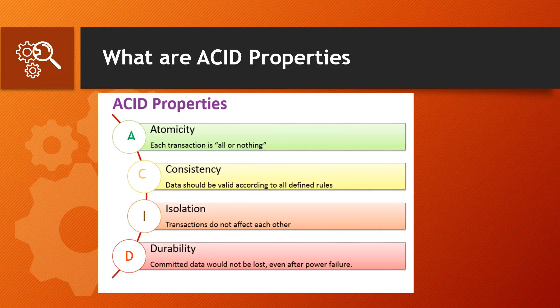Atomicity means all or nothing — either you have a transaction or not. Consistency means a defined rule; according to that, our data is saved and updated, and it doesn't go beyond the rules. Isolation means each transaction is different and doesn't affect other transactions. Durability means that once your data is saved, it will not be lost at any point.